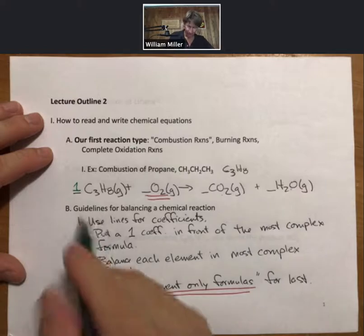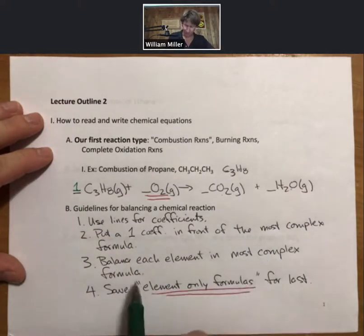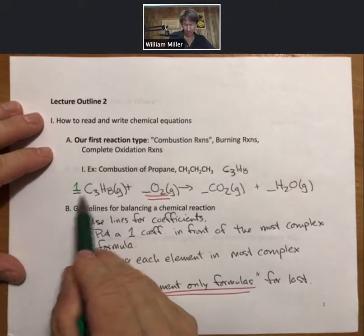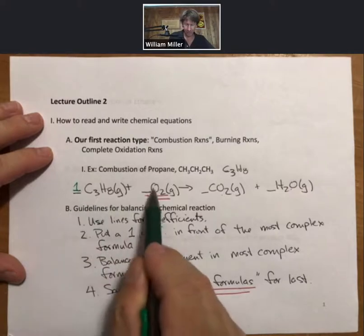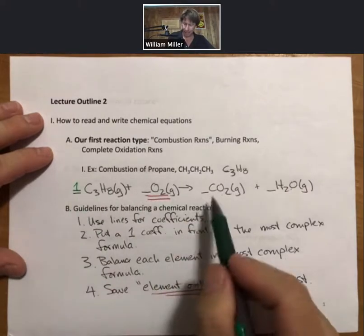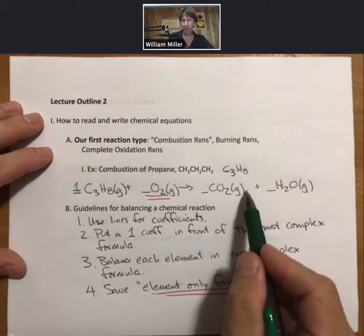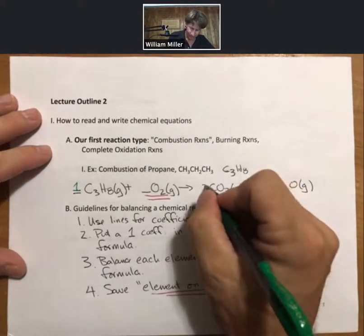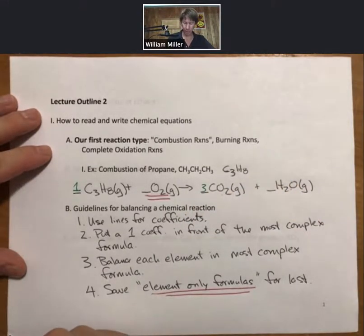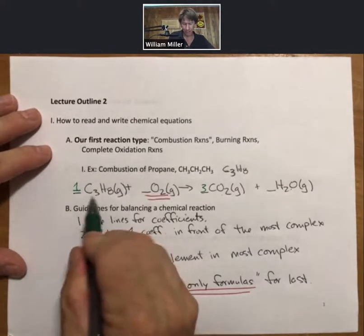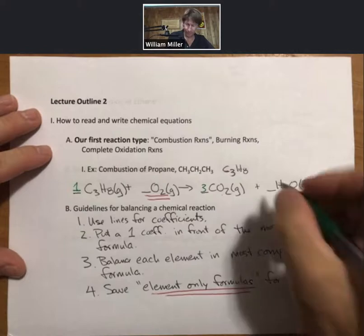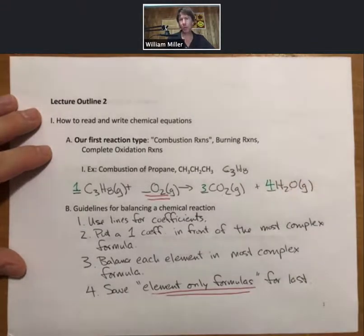So what do I mean by balance each element in the most complex formula? Now that I have a one coefficient here, I know that there are one times three carbons on the reactant portion. And now I need three carbons on the product portion of the reaction. Carbon only appears here. My coefficient for carbon dioxide must be a three. Now my carbons are balanced. I'll do the same thing for my hydrogens. One times eight is eight. Hydrogens come two at a time. I need a four coefficient there.